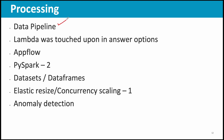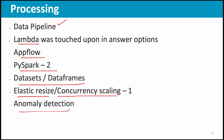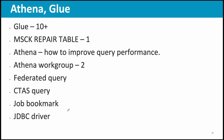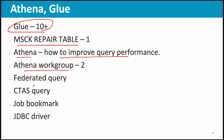For processing and data pipeline: Lambda had no direct questions but appeared in answer options across multiple questions. Airflow: one question. PySpark: a couple of questions. Datasets and DataFrames: questions present. Elastic resize and concurrency scaling: one question. Anomaly detection: at least one question. For Athena and Glue — Glue had at least 10 appearances in questions or answer choices, so know Glue well. Topics covered included: MSCK REPAIR TABLE, how to improve Athena query performance, Athena workgroups (a couple of questions), federated query, Ctask query, job bookmarks, and JDBC driver.